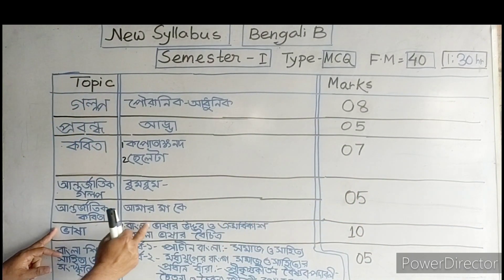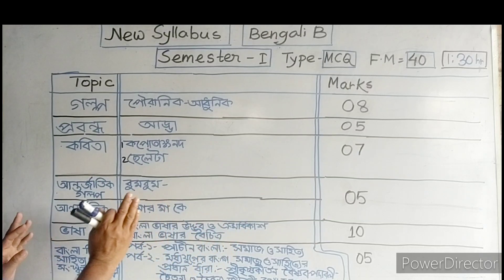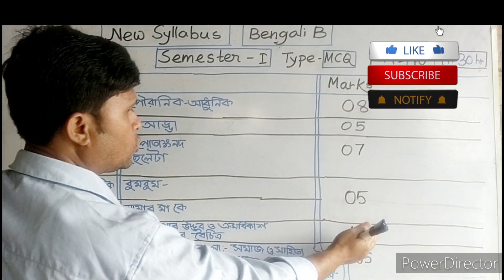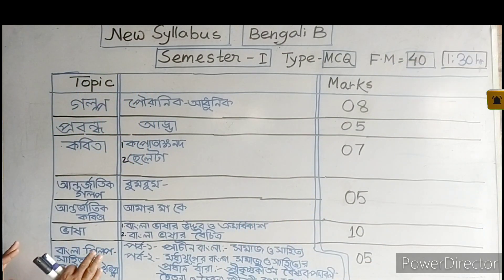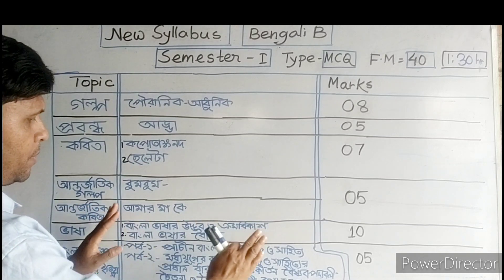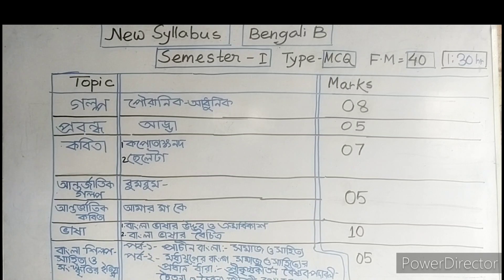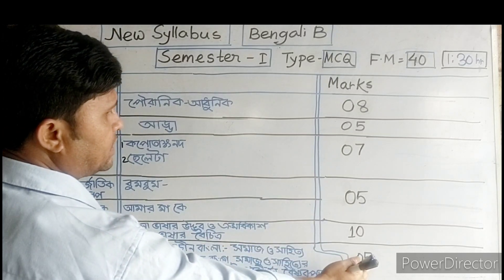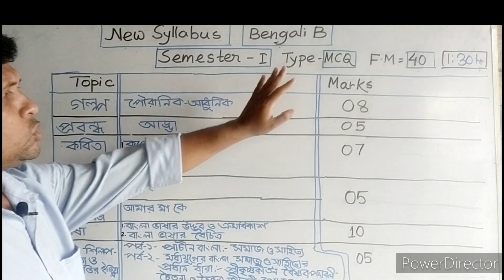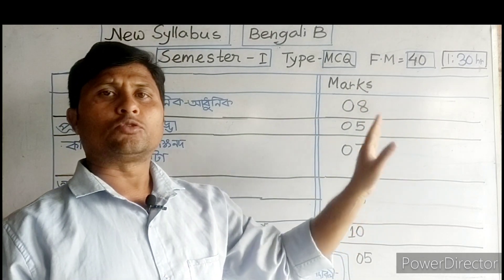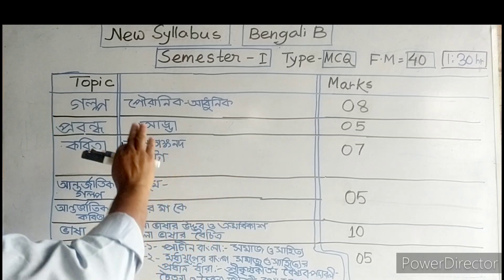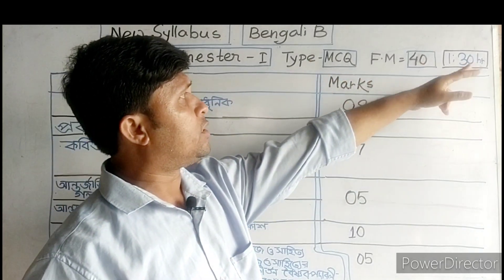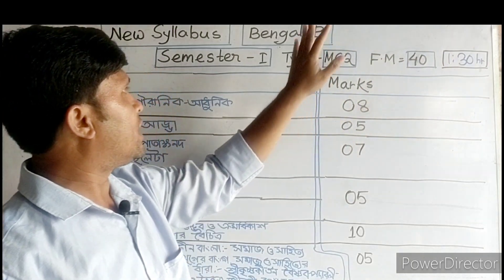In the language section, you will be able to get a number of 10 MCQ types, and a number of 5 MCQ types, and a number of 4 MCQ types.